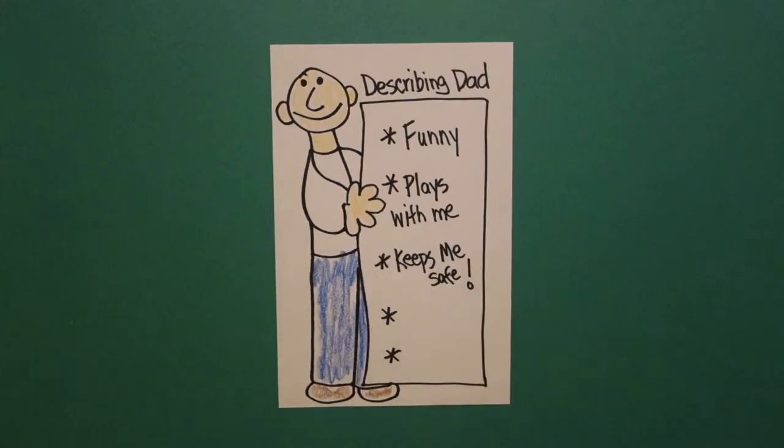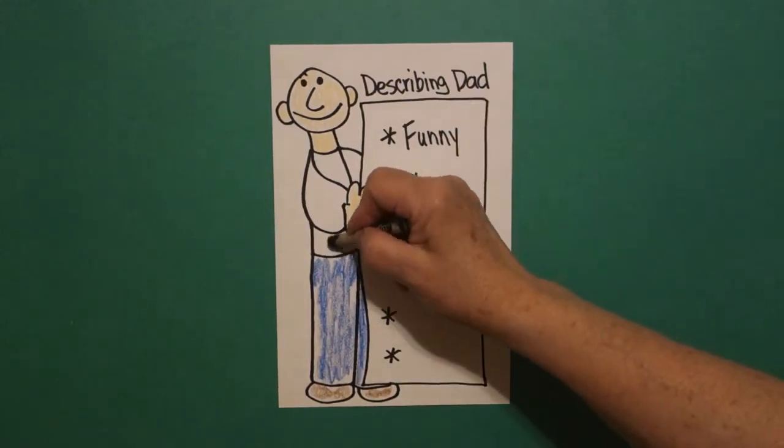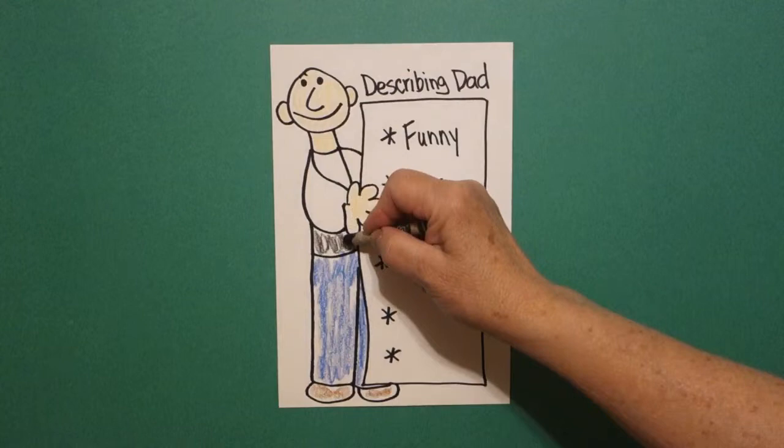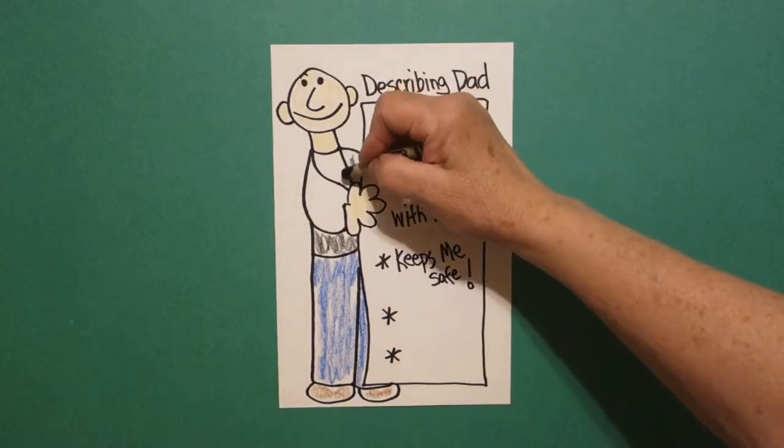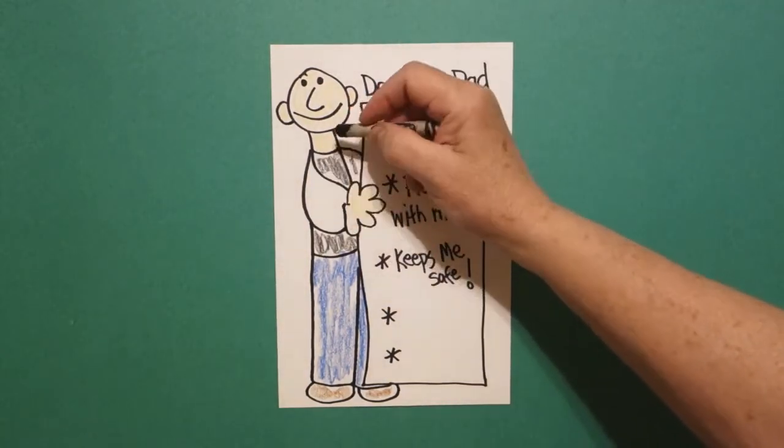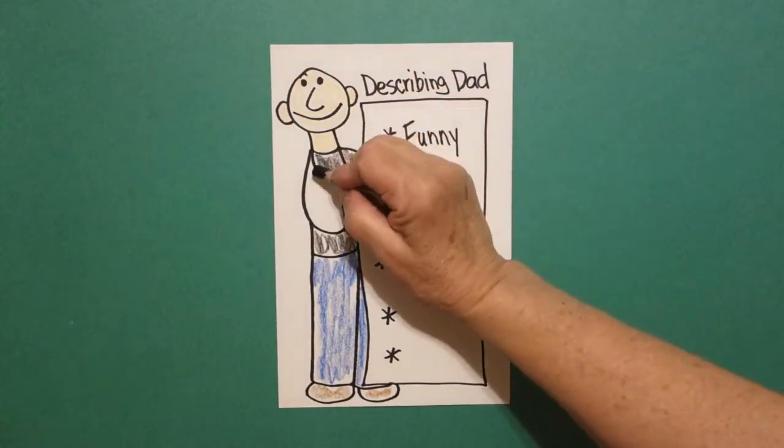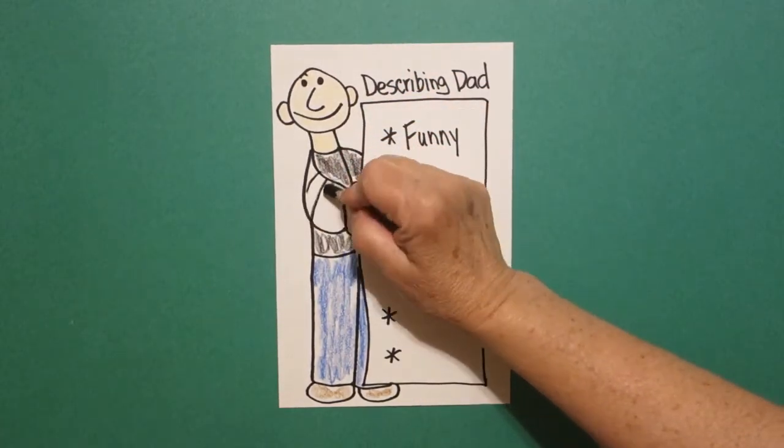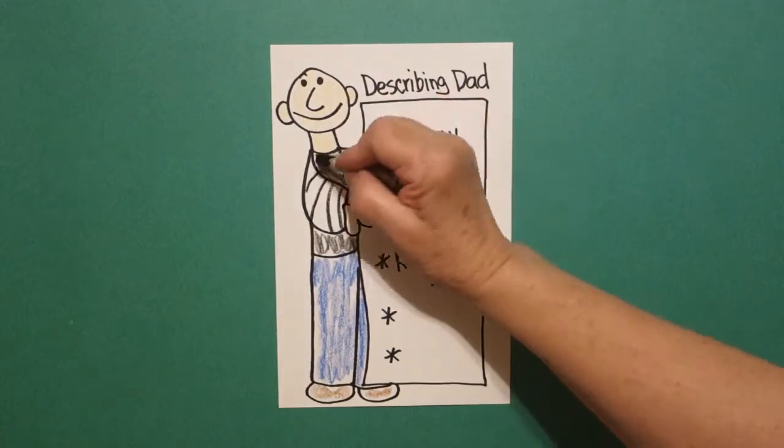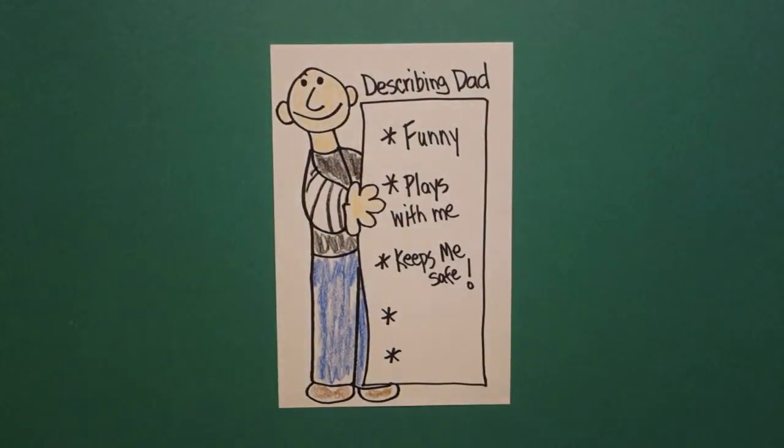And then, I'm just going to give him a black shirt. Now, again, if you want to give your dad a different look, go for it. I'm going to add some stripes on his shirt. It's all up to you. It's your dad. Okay, let's see what he looks like all colored in.